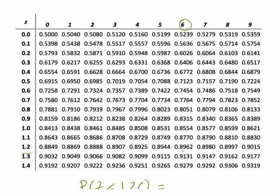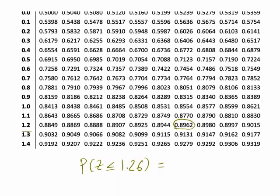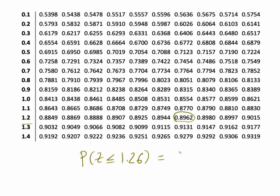we find the required probability here. So in a standard normal distribution, the probability of z being less than or equal to 1.26 is 0.8962.